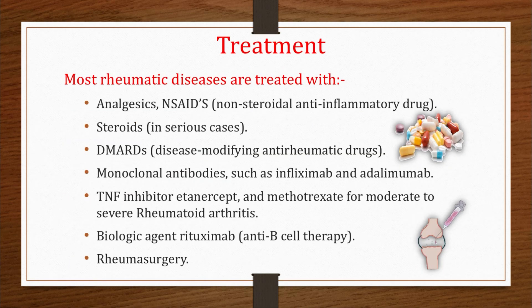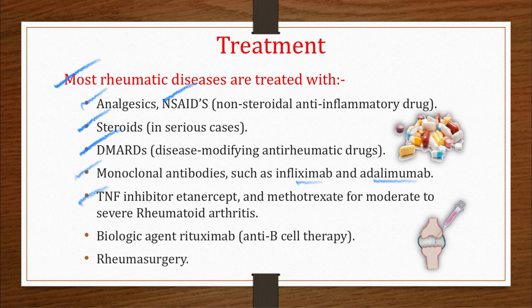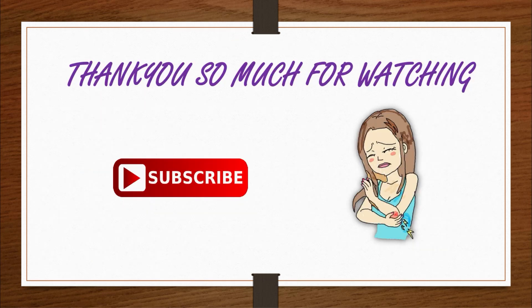Most rheumatic diseases are treated with analgesics and NSAIDs (non-steroidal anti-inflammatory drugs), steroids especially in serious cases, and DMARDs (disease-modifying anti-rheumatic drugs). Monoclonal antibodies such as infliximab and adalimumab, TNF inhibitor etanercept, and methotrexate are used for moderate to severe rheumatoid arthritis. Note that methotrexate is the first-line DMARD. Biological agents like rituximab — an anti-B-cell therapy — and rheumatic surgery in cases where medical therapy has failed are also options.